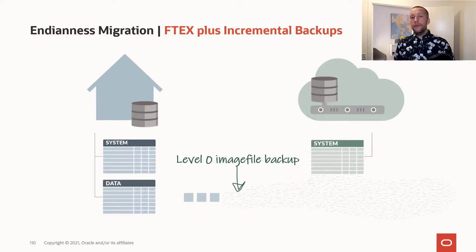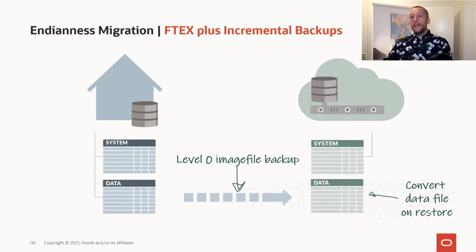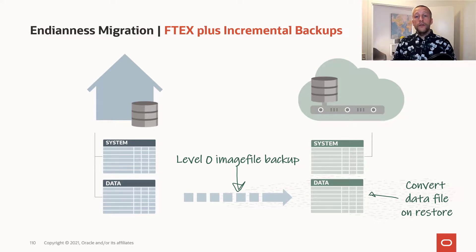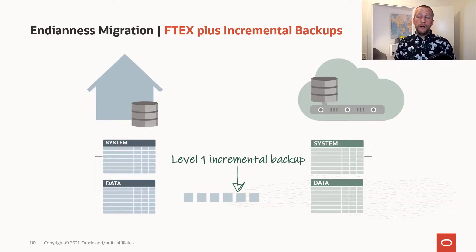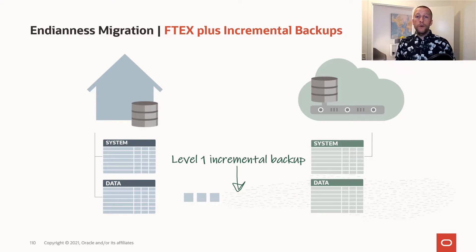First, we create a level zero image copy backup. When we restore that in our target system, RMAN can convert the data file at the same time. Like the previous example, we need enough room in storage to hold a copy of the data file. Then you can do an additional level one incremental backup and apply the latest changes from the source database to the data files on the target system. You can keep doing additional level one incrementals as often as you like — the more incremental backups you perform, the faster the final incremental backup will be.